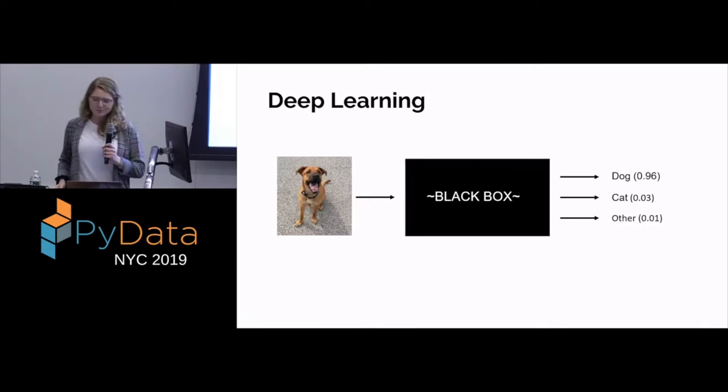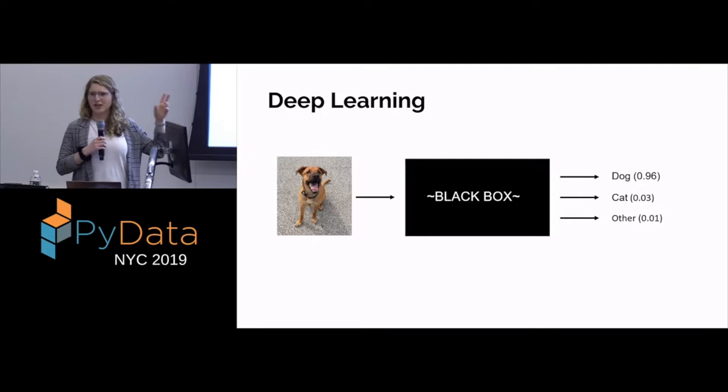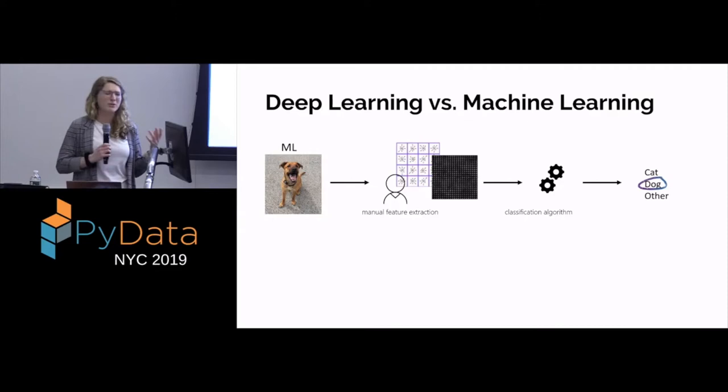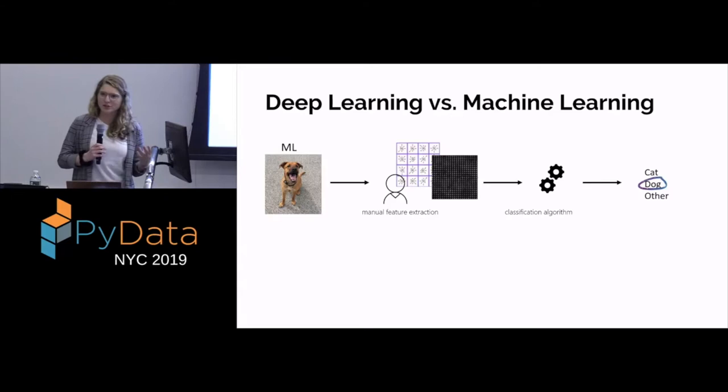This black box approach differs a bit from traditional machine learning, where we can better understand the exact features that are playing a role in our model. For instance, if you're doing traditional machine learning and creating a model for popular travel destinations, you might think climate or temperature could be an important feature. But with deep learning, you don't have as much of that knowledge. There's a ton of cool research going in to try to understand that and reduce the biases introduced.